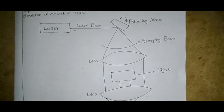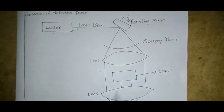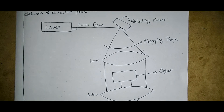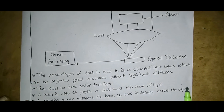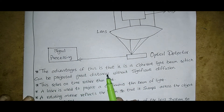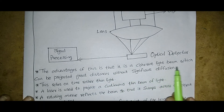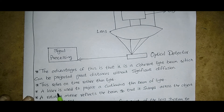Now we will understand what input and output are involved in this diagram. The advantage is that it uses a coherent light beam which can be projected great distances without significant diffusion. This relies on time rather than light intensity. A laser is used to project a continuous thin beam of light.